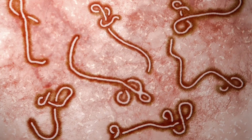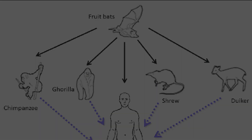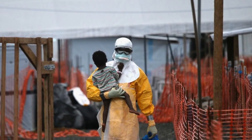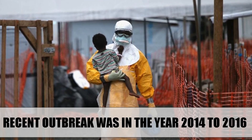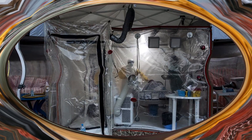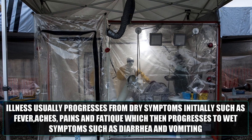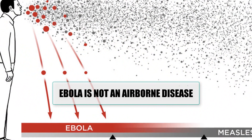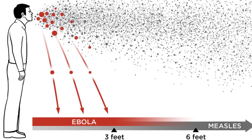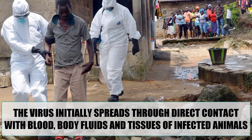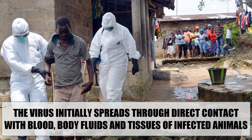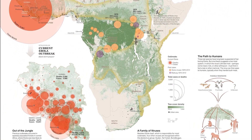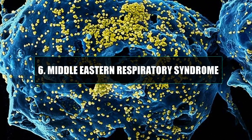Ebola. Ebola virus disease, also known as Ebola hemorrhagic fever, is a viral fever of humans and other primates caused by Ebola viruses. It was first discovered in 1976 in the Ebola River, in what is now known as the Democratic Republic of Congo. The most recent outbreak was in the years 2014 to 2016. The illness usually progresses from dry symptoms — fever, aches, pains, and fatigue — to wet symptoms such as diarrhea and vomiting. Ebola is not airborne; it spreads through direct contact with blood, body fluids, and tissues of animals, and has killed around 11,000 people in four years. Ebola virus originated in sub-Saharan Africa.